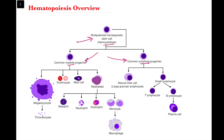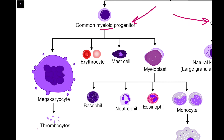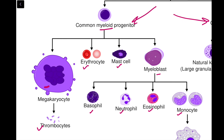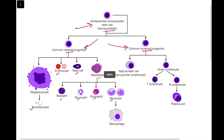The cells formed from the common myeloid progenitor include platelets, RBCs, mast cells, and the myeloblast. The myeloblast is the precursor for basophils, neutrophils, eosinophils, and monocytes. To easily memorize this, you can say that the myeloid series gives rise to all blood cells except the lymphocytes, which obviously arise from the lymphoid series.